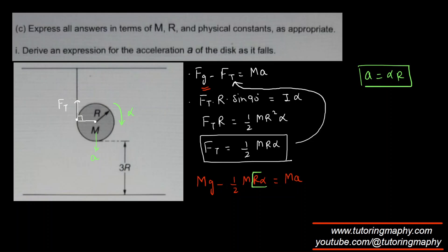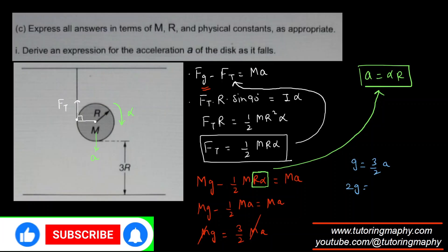So you're going to use that. If you see carefully, this is R alpha which can be replaced with A. So I'm going to say that MG minus half MA equals MA. Adding half MA both sides, so MA plus half MA is three halves MA. M and M is gone from both sides, which means that G equals 3 over 2 A, which means that 2G equals 3A, which means that acceleration is 2G over 3. Well that's a pretty nice number.